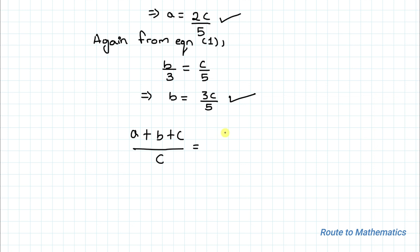Just put the value of a here: that is 2c/5 plus b is 3c/5 plus c, divided by c.